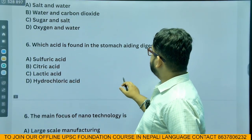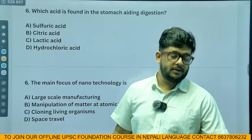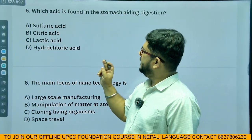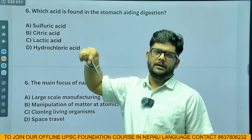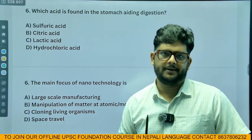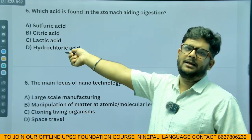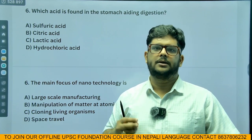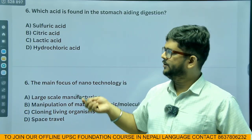Which acid is found in the stomach aiding digestion? The answer is hydrochloric acid, HCl. Sulfuric acid is not naturally found in the body. Citric acid is found in citrus foods — sour foods like lemons, apples, and oranges.